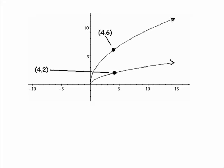And this probably won't surprise you. But on the transformed curve, that point becomes 4, 6. So the x-coordinate is unchanged. But the y-coordinate is multiplied by 3.